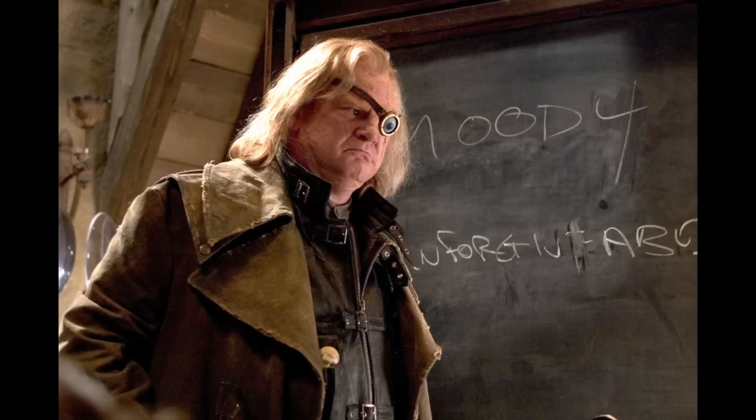In Harry Potter and the Goblet of Fire, Barty Crouch Jr., disguised as Alastair Moody, performs the three unforgivable curses on a spider during his first Defense Against the Dark Arts class, even though it's against the law and any use of the curses will get the user sent straight to Azkaban. So why did Barty use them in a classroom?